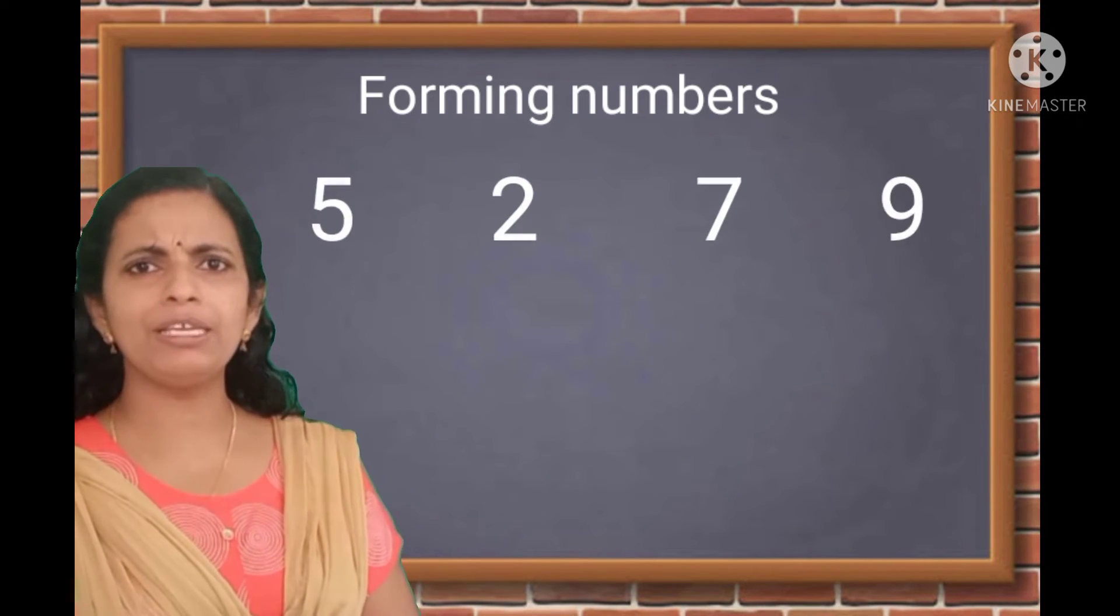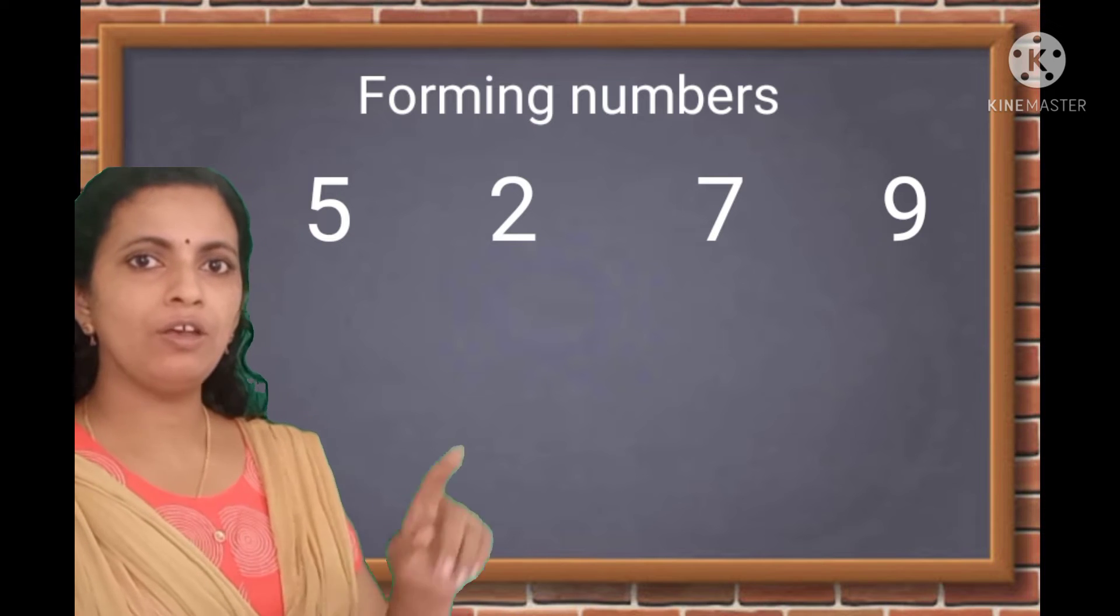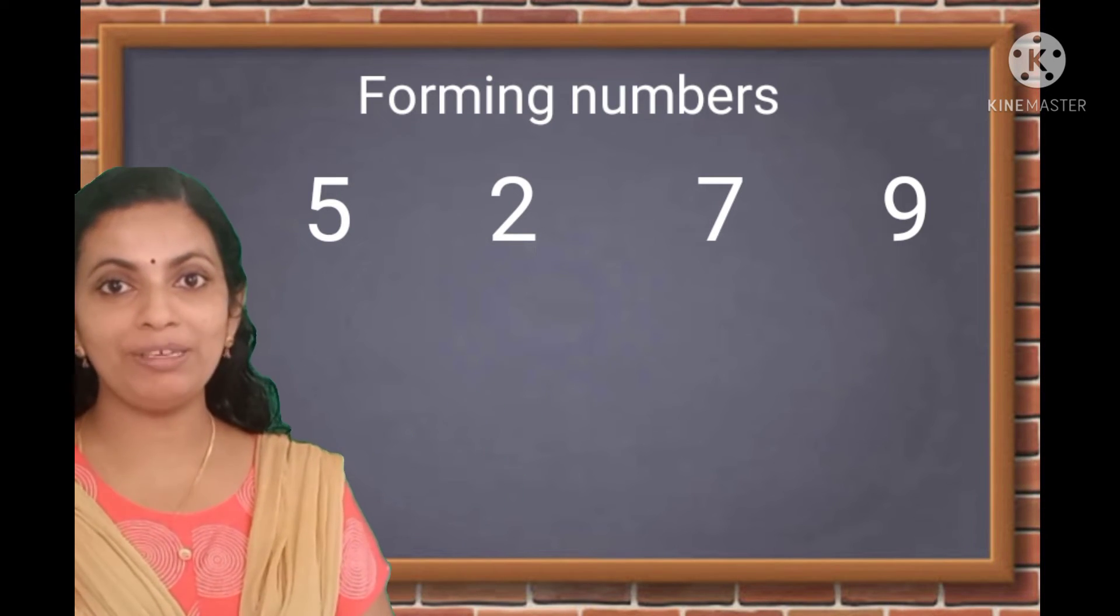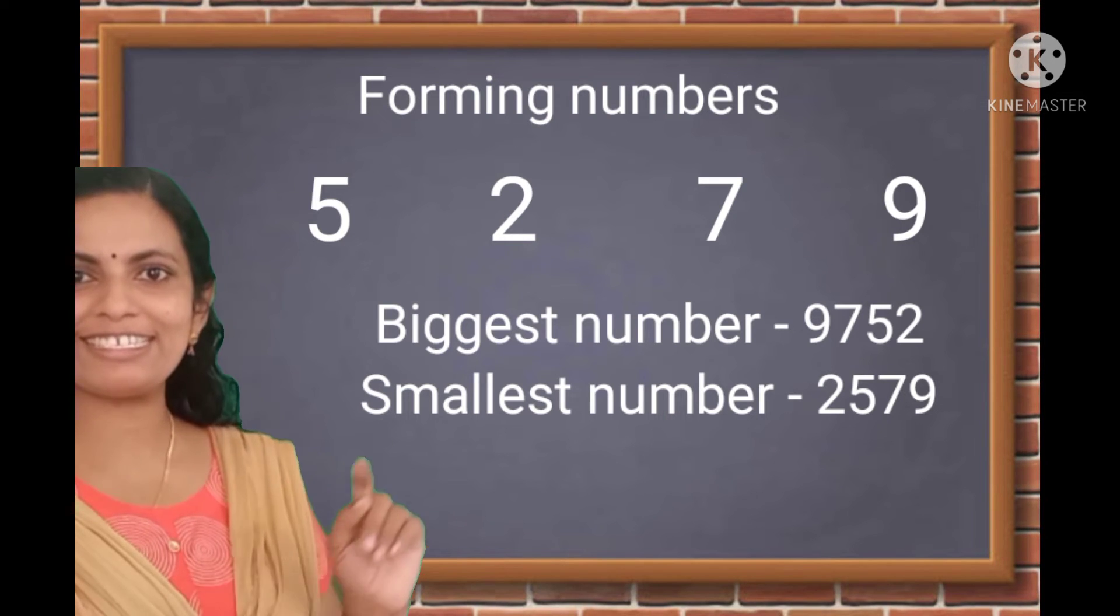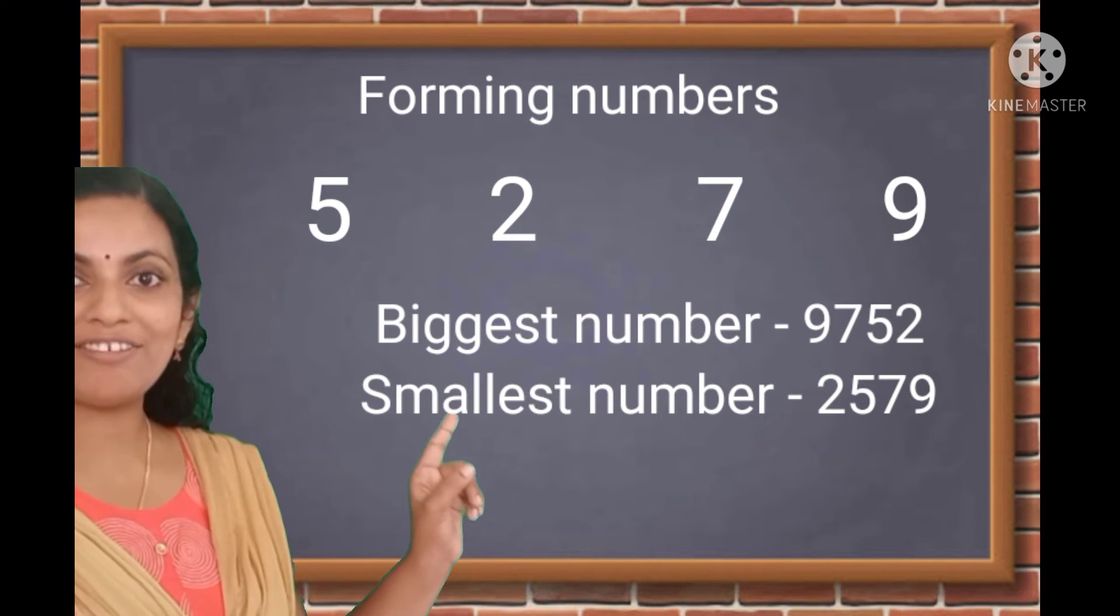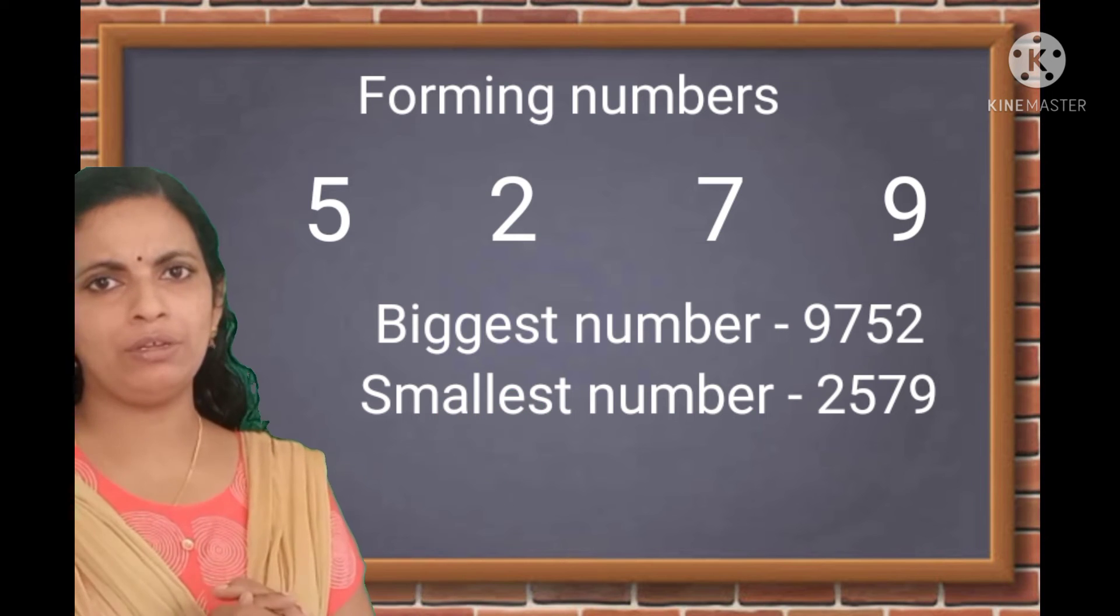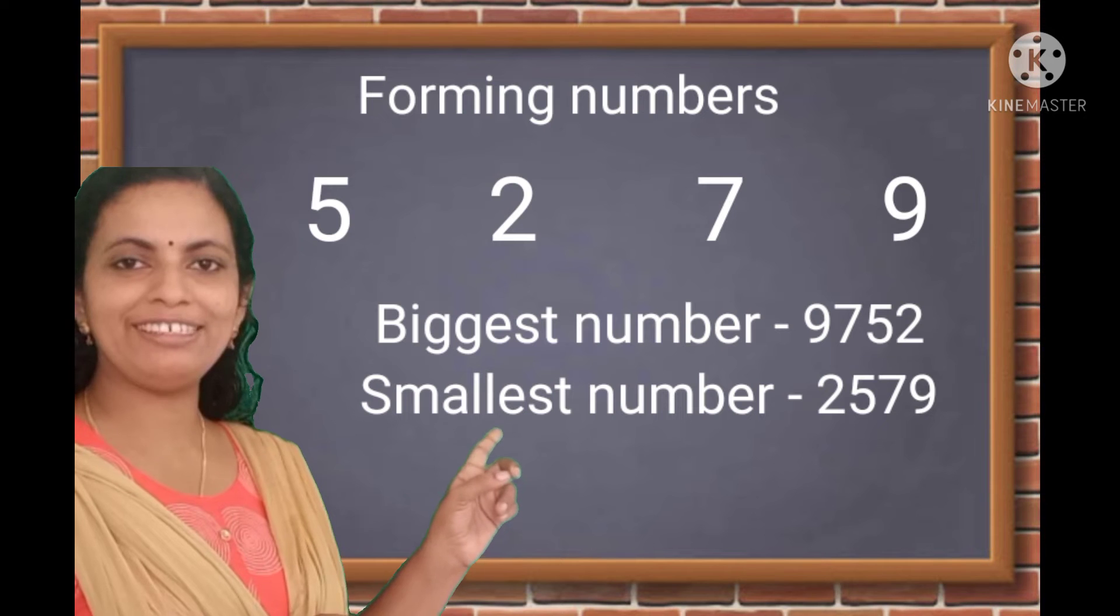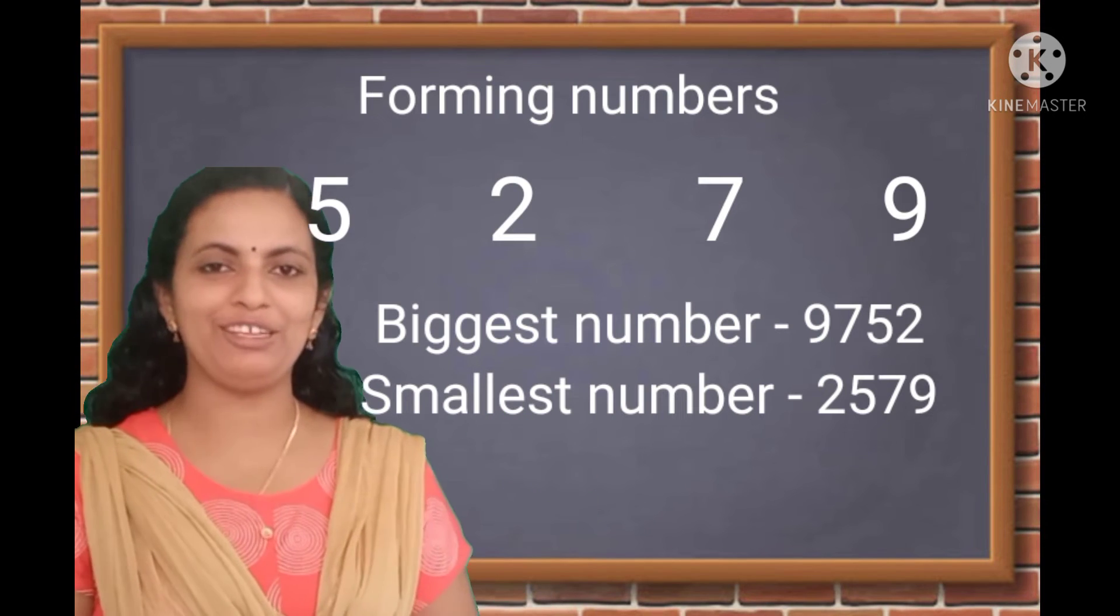Very good. Now, let me give another four digits: 5, 2, 7, 9. Can you find the biggest number? Yes, 9752. Now, what about the smallest number? 2579. Very good.